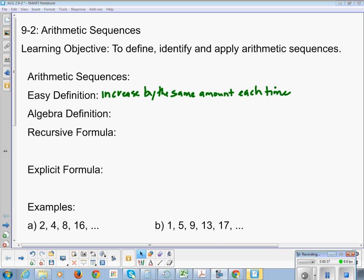The algebra definition says if my first term is A, then my second term is A plus D, and my third term is A plus 2D, and my fourth term is A plus 3D, and so on, where D is my common difference.